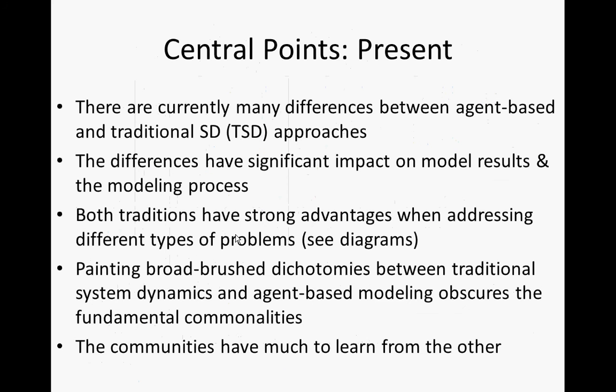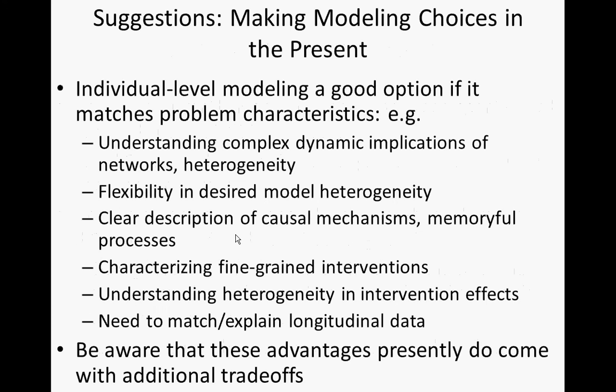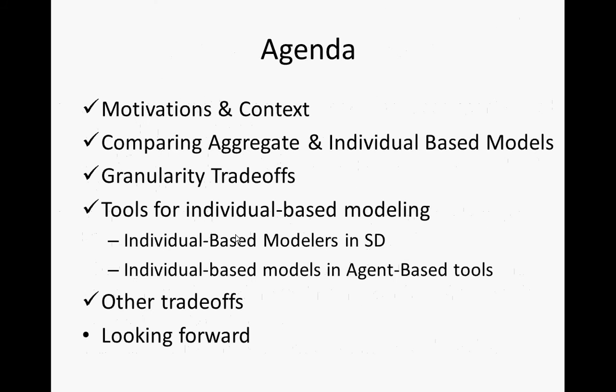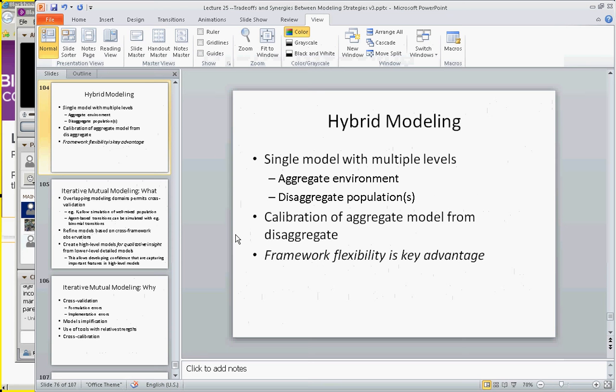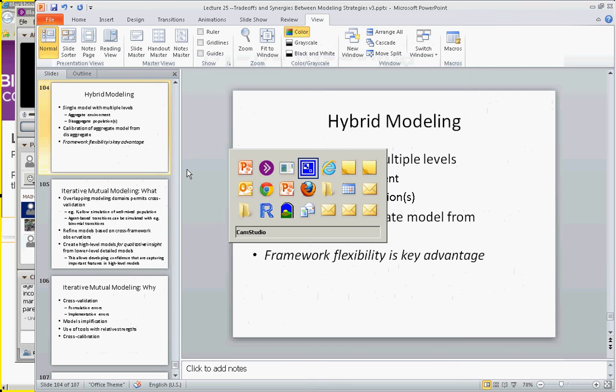Some central points: there are big differences between agent-based modeling and aggregate modeling as used by traditional system dynamics, and these differences have significant impact on model results and the modeling process. Both traditions have strong advantages in addressing different sorts of problems. Painting these as two opposing techniques really does a disservice — we need to ask what each does well and how we can use them effectively together, and how each can learn from the other.